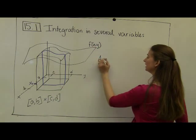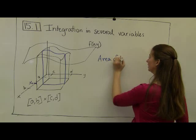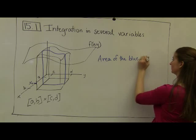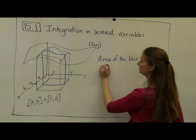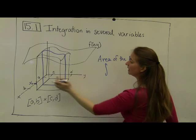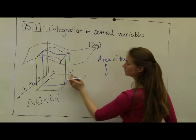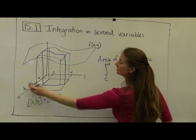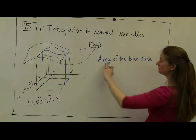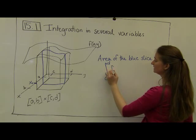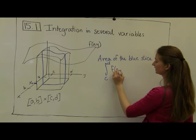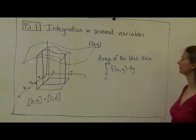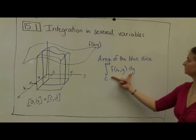So the area of the blue slice is given by an integral. And it's the integral where my y values are varying. My y values are going from c to d. But in this case, my x values are fixed constant at x-naught. So it's an integral only of one variable, evaluated at f(x-naught, y) dy.